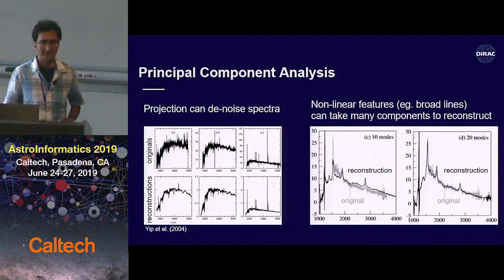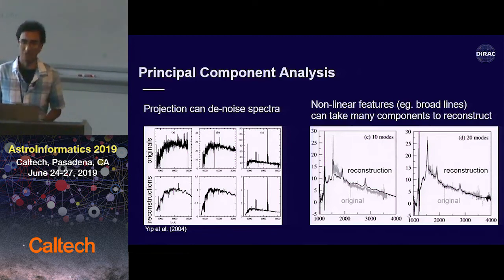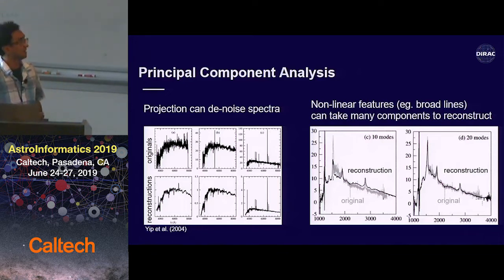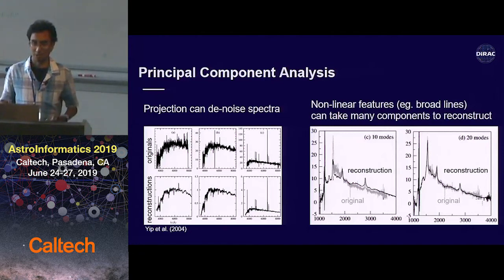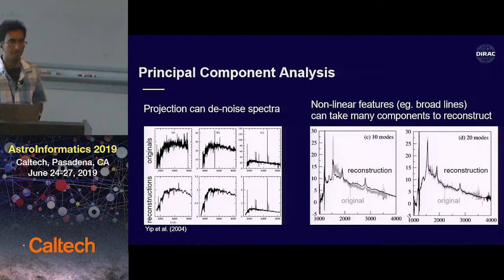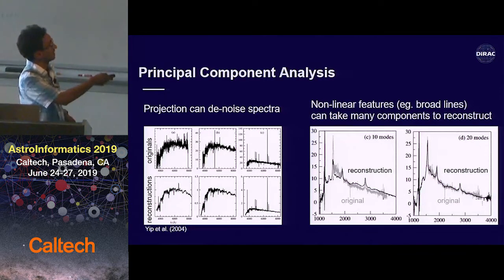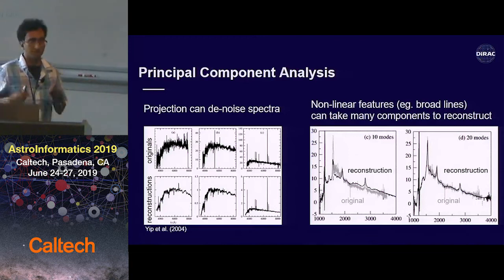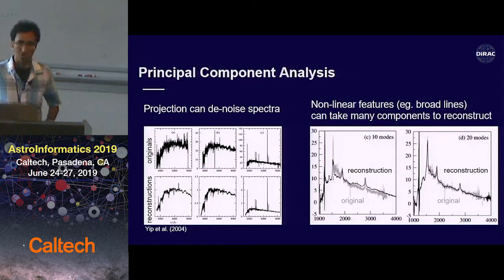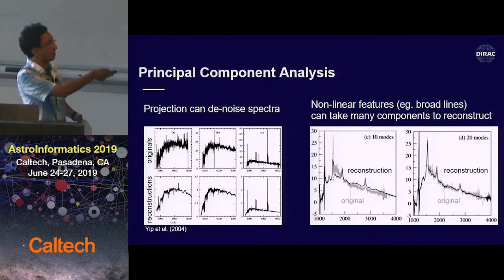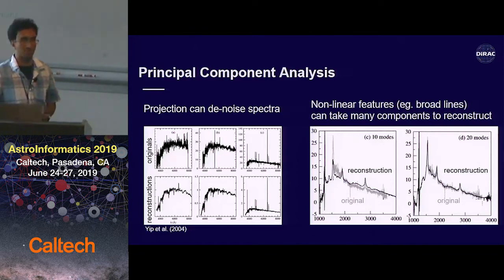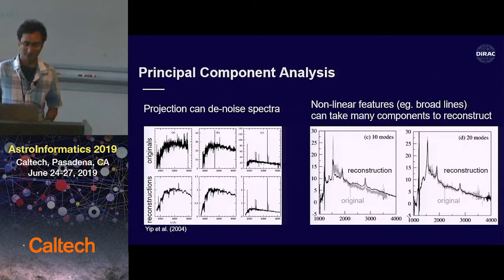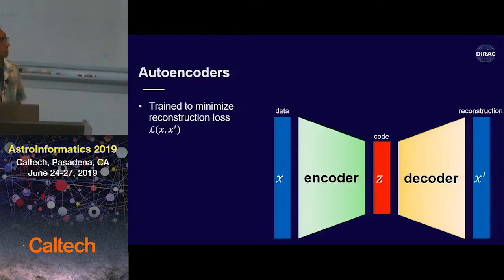One of the main disadvantages of PCA is that it's a completely linear method. If you've got nonlinear features like spectral lines with varying broadnesses, that can be hard to capture in a small number of PCA components. On the left I've got a spectrum with broad spectral lines in gray, and the thin black line shows a PCA reconstruction using the first 10 components. While the overall shape is captured, there are clear differences, and you need more PCA terms for an acceptable reconstruction. This motivates thinking about autoencoders.